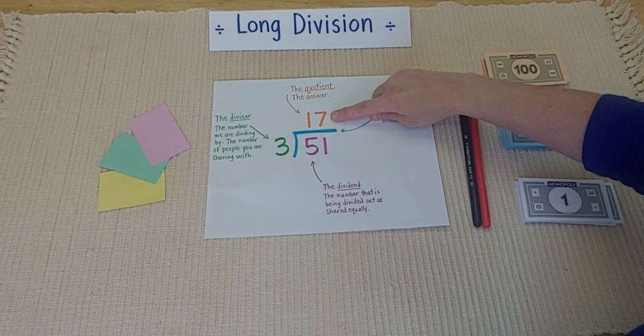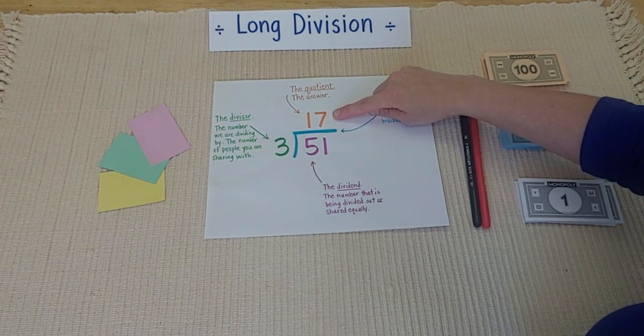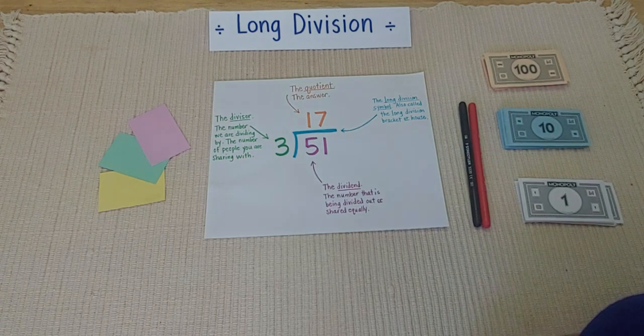17, that is the quotient. That's a fancy word for an answer to a division problem.